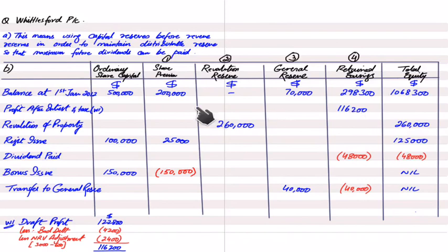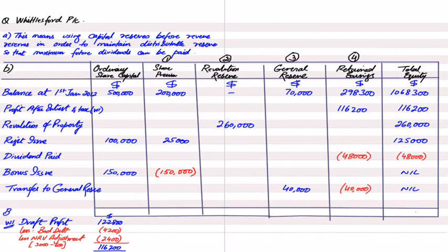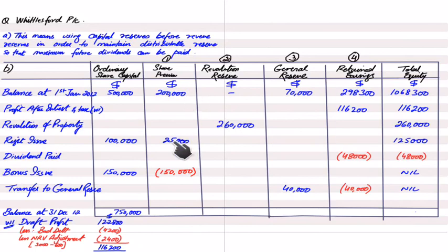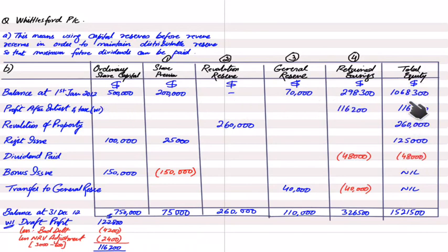The profit of 116,200 is credited to retained earnings; as retained earnings increases, total equity also increases. We can now calculate the closing figures: original capital 500,000 plus rights issue 100,000 plus bonus issue 150,000 equals total share capital of 750,000. Adding the share premium column with the deduction for bonus issue, plus revaluation reserve, general reserve, and retained earnings gives the closing total equity. The horizontal figures in each column should cross-check with the total equity column.